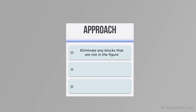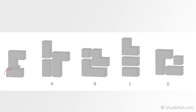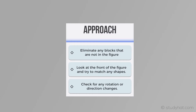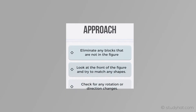Now let's take a look at the approach. The first step is to eliminate any blocks that are not in the figure — look at the figure and check A, B, or C to spot any blocks that don't appear in the figure you're trying to get. Start looking at the front of the figure and see if you can match the shapes, as the front shape will usually start you off. Finally, check for any rotation or direction changes.